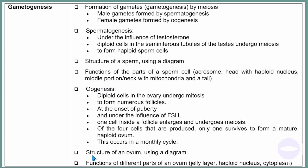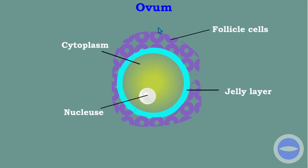We must know the structure of the parts of the ovum: the jelly layer, nucleus, and the cytoplasm. Here is the structure of the ovum — we have cytoplasm (the space inside), the nucleus, and the jelly layer. Please use the term 'jelly layer' rather than zona pellucida for terminology. You only need to know the functions of the cytoplasm, nucleus, and the jelly layer.